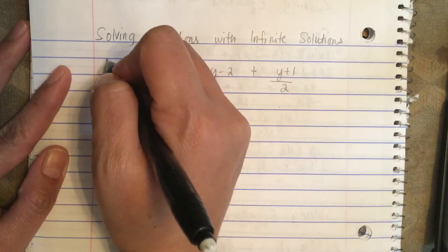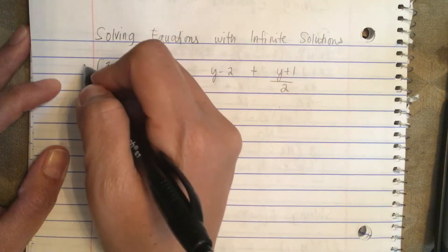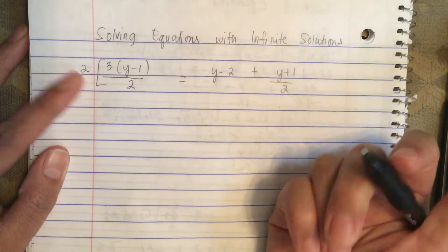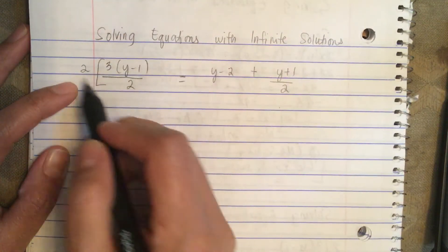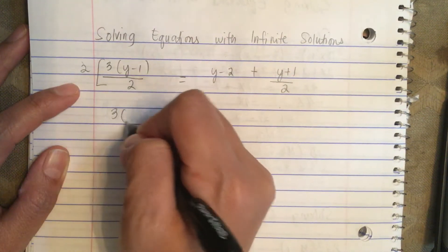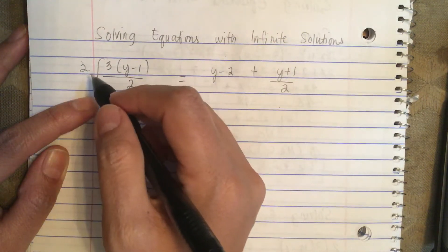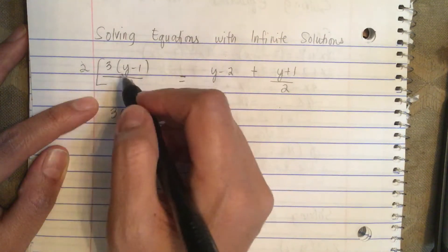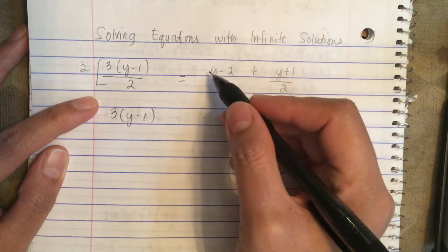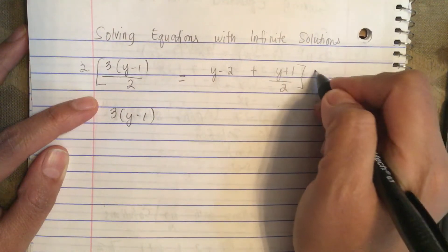We can get rid of the denominator by multiplying by 2. So multiplying the left side, the 2s cancel and we have 3(y-1). Now if we multiply this side by 2, we must multiply the other side of the equation by 2 also.